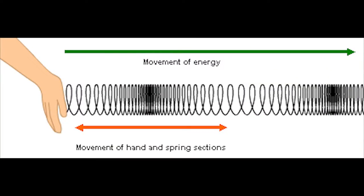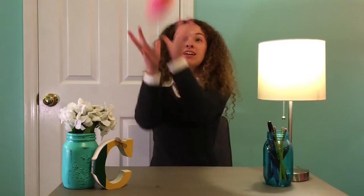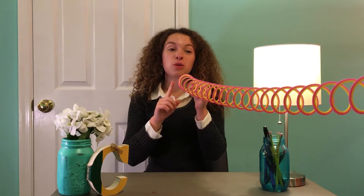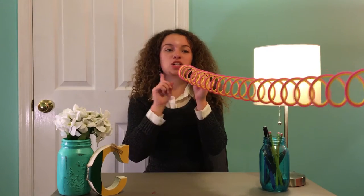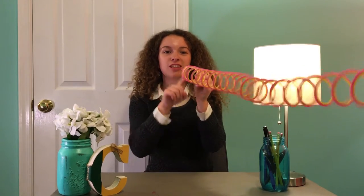The opposite of a transverse wave is a longitudinal wave, which moves the particles of the medium in the same direction the wave is traveling. Take it back to your childhood and imagine a slinky — or get a real one. When you push on one end, it causes a chain reaction of compression and expansion.